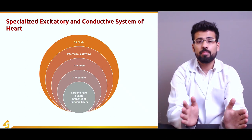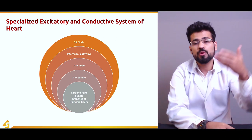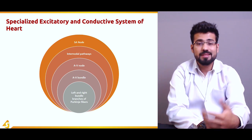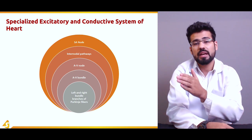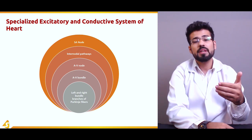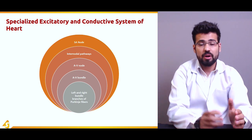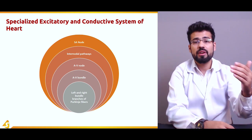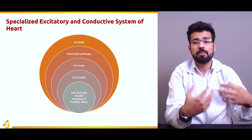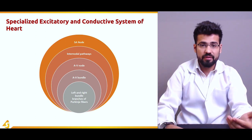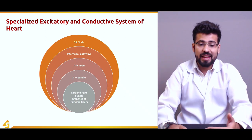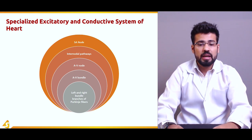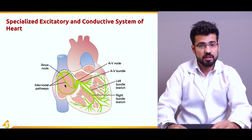The AV node plays a very important function in delaying impulses coming from the SA node toward the AV bundle. As discussed earlier, there is a gap of one-sixth of a second before the ventricles contract. This gap is provided by the AV node, which keeps the electrical impulses for a particular time — a delay — so that the ventricles get time for blood to be filled in them. After the AV node, transmission is conducted to the AV bundle and then to the left and right bundle branches of the Purkinje fibers.